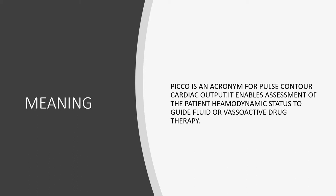To know the patient is in shock, we need to know certain parameters — we call them the three clinical windows. The first is the brain: we will see altered mental status, whether the patient is drowsy, confused, comatose, or delirious. The second clinical window is the kidney: we will see mainly the urine output — if the patient is in shock, they will have low urine output. The third window is the skin: skin will be cold, clammy, pale, and mottled — mottled means you can see different colors in different areas.